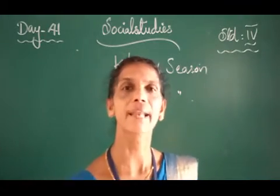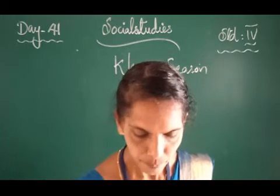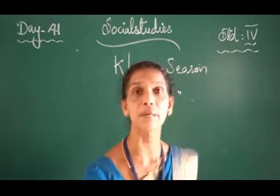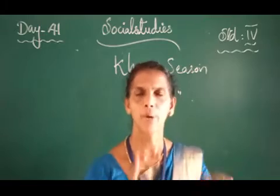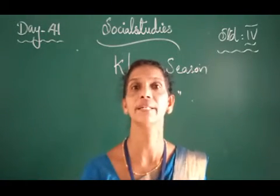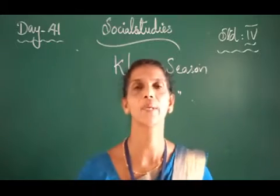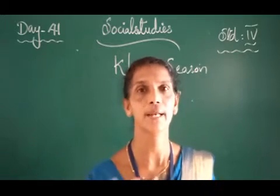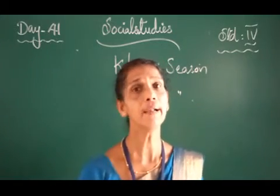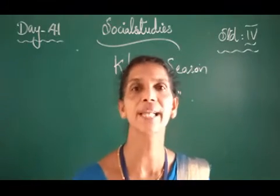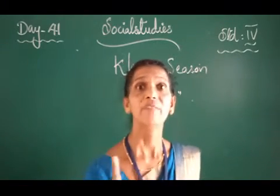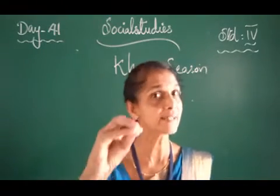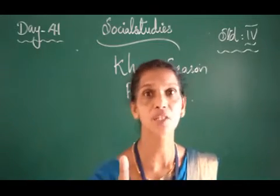The Rabi season starts with the coming of the North East monsoon in September or October, and it is harvested in March or April.